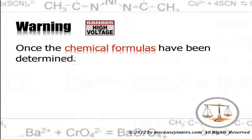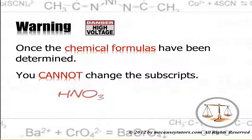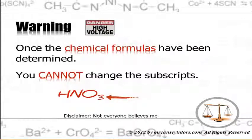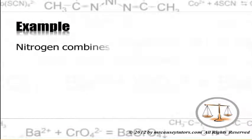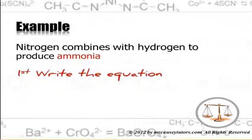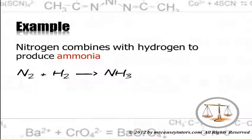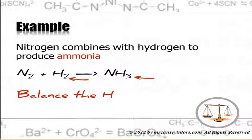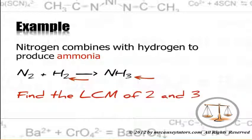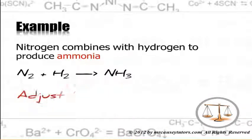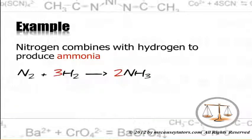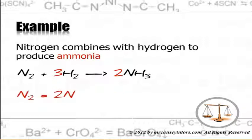Once chemical formulas have been determined, you cannot change the subscripts. If you need to change them, you wrote the wrong formula to begin with. Example: nitrogen combines with hydrogen to produce ammonia. N₂ + H₂ → NH₃. Balance the hydrogens by finding the lowest common multiple of 2 and 3, which is 6: N₂ + 3H₂ → 2NH₃. Checking nitrogen: N₂ = 2N — it's balanced.